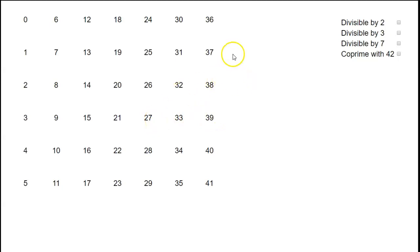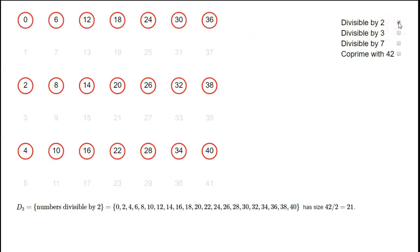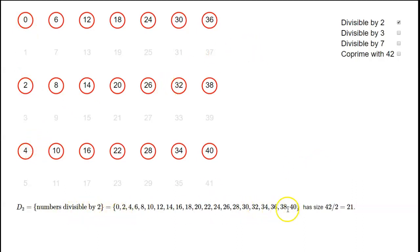Firstly, we need to see how many of these numbers are divisible by 2. We've got 42 numbers and every alternate one is divisible by 2. We've listed them all here — how many of them are there? It's just going to be 42 over 2, which is 21.